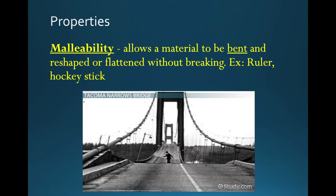Same thing with the hockey stick. When you hit a puck and do a slap shot, the hockey stick will bend slightly but then it will go back to its original shape. Same thing with this bridge over here. This is an old picture — it's in black and white. They had built a bridge in Tacoma and they did not take the winds into consideration when they built the bridge. The engineers didn't think of that, and the winds were so strong at one point that the bridge started swaying and eventually broke. You can see the man here trying to run away before the bridge collapses. So that's malleability.